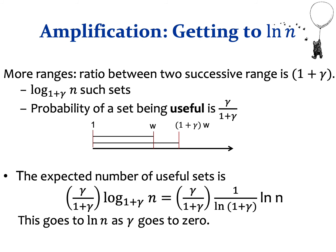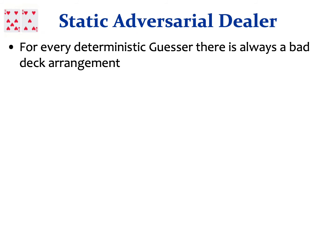We can amplify this technique to get closer to ln n correct guesses by having more subsets and making them denser. If the ratio between two successive subsets is 1 plus gamma, then we have log n base (1 plus gamma) such subsets, and the probability of each one being useful is gamma over (1 plus gamma). The expected number of useful subsets and correct guesses goes to ln n as gamma goes to zero.